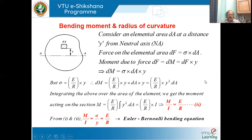The Euler-Bernoulli equation is: M/I = σ/y = E/R. Where M is the bending moment, I is the moment of inertia, σ is the stress induced, and y is the distance from the centroidal axis to the layer considered. If nothing is mentioned, y is taken as the distance from the centroidal axis to the farthest layer. E is the modulus of elasticity and R is the radius of curvature.